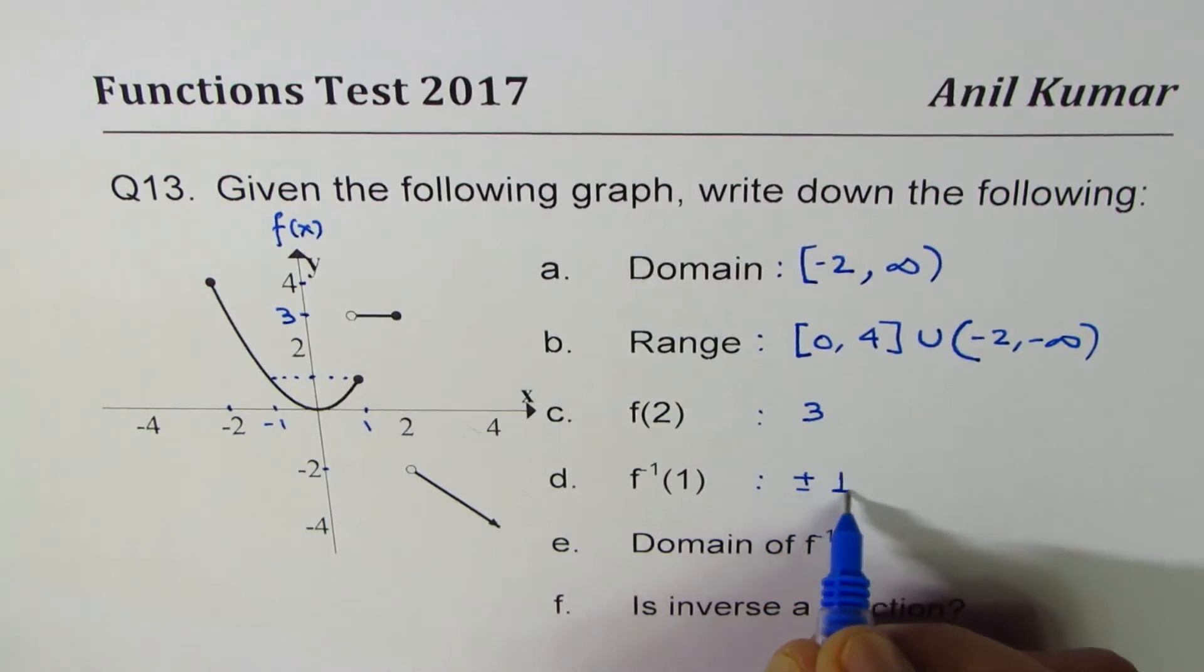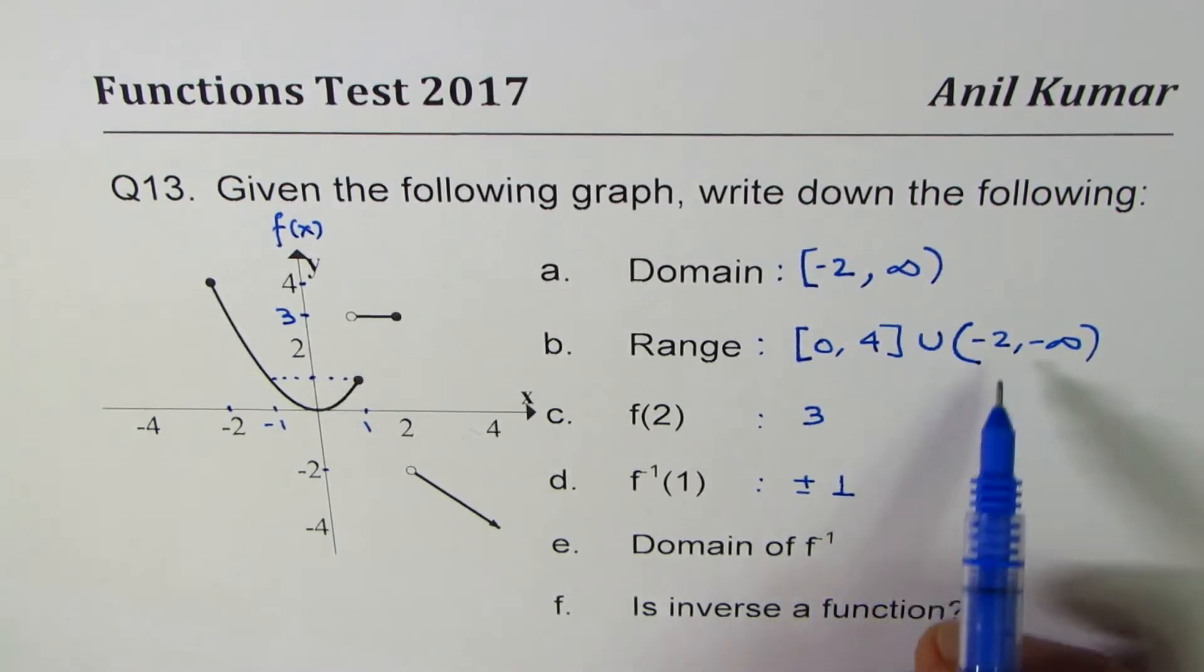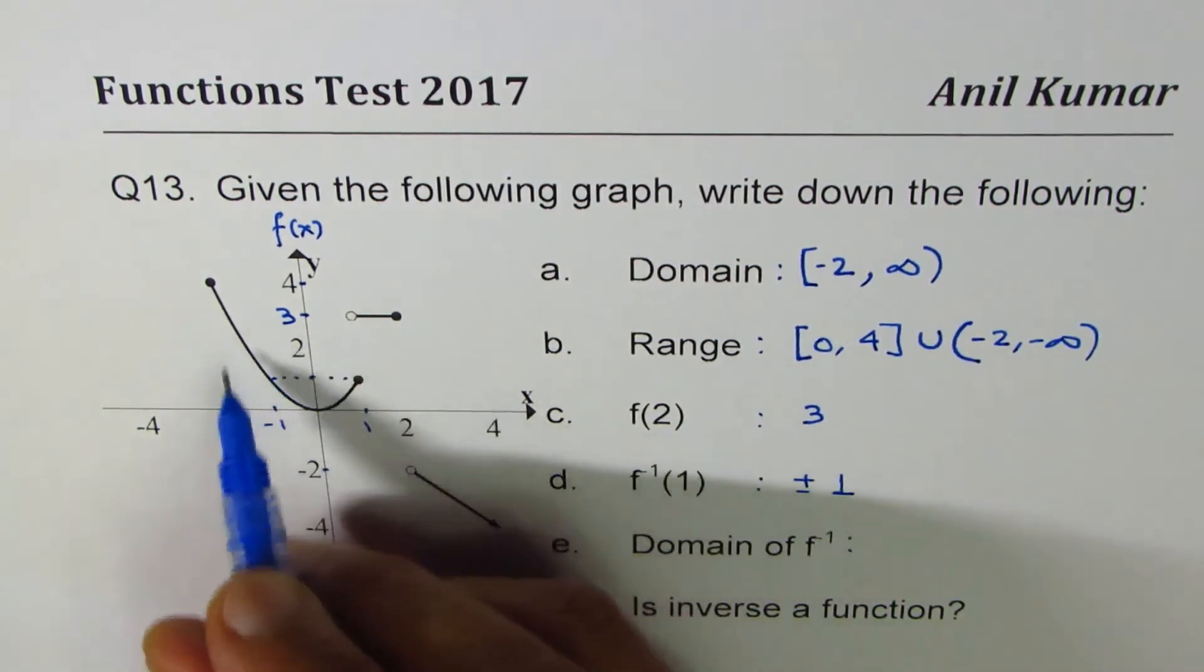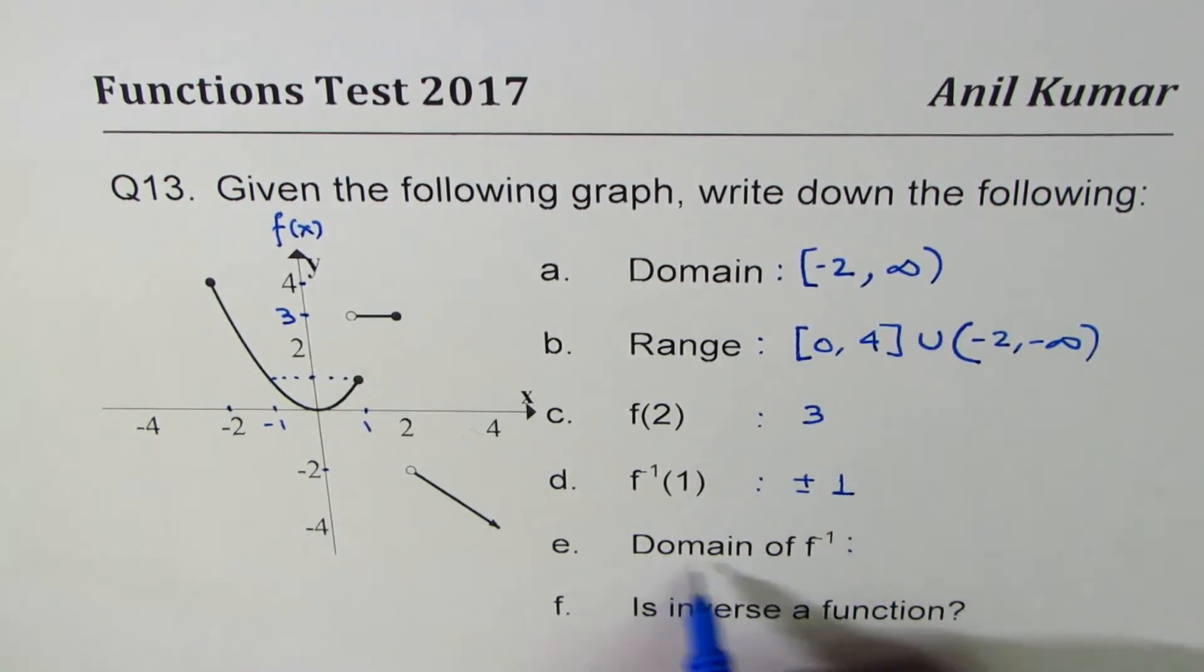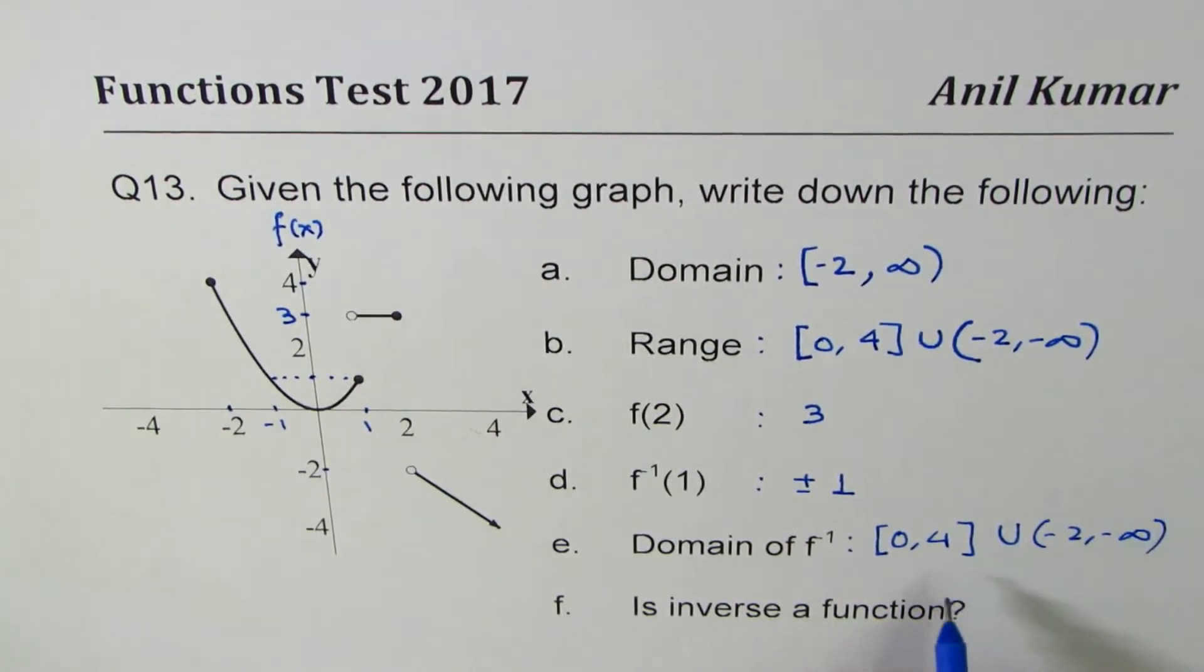Now we have to write domain of f inverse. Whenever you find domain and range of an inverse function, it's kind of flipped, so range becomes the domain. So without even thinking, we could copy this. Domain of f inverse is from 0 to 4, union minus 2 to minus infinity. You get the idea - domain of inverse of a function is actually the range of the function.